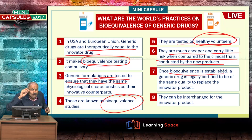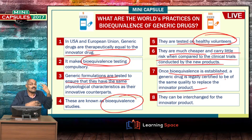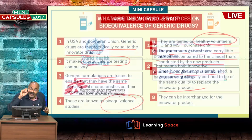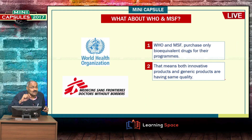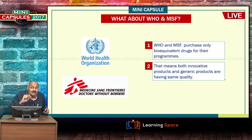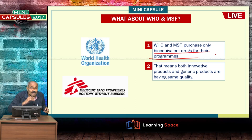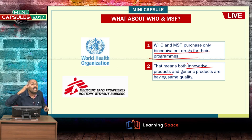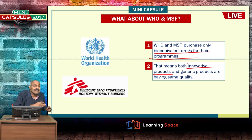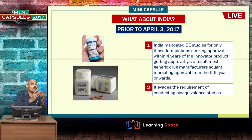Once bioequivalence is established, a generic drug is legally certified to be of the same quality and can replace and be interchanged with the innovator product. The World Health Organization and Medicines Sans Frontières — important organizations across the world — purchase only bioequivalent drugs for their programs, meaning both innovative and generic products are held to the same quality standard.